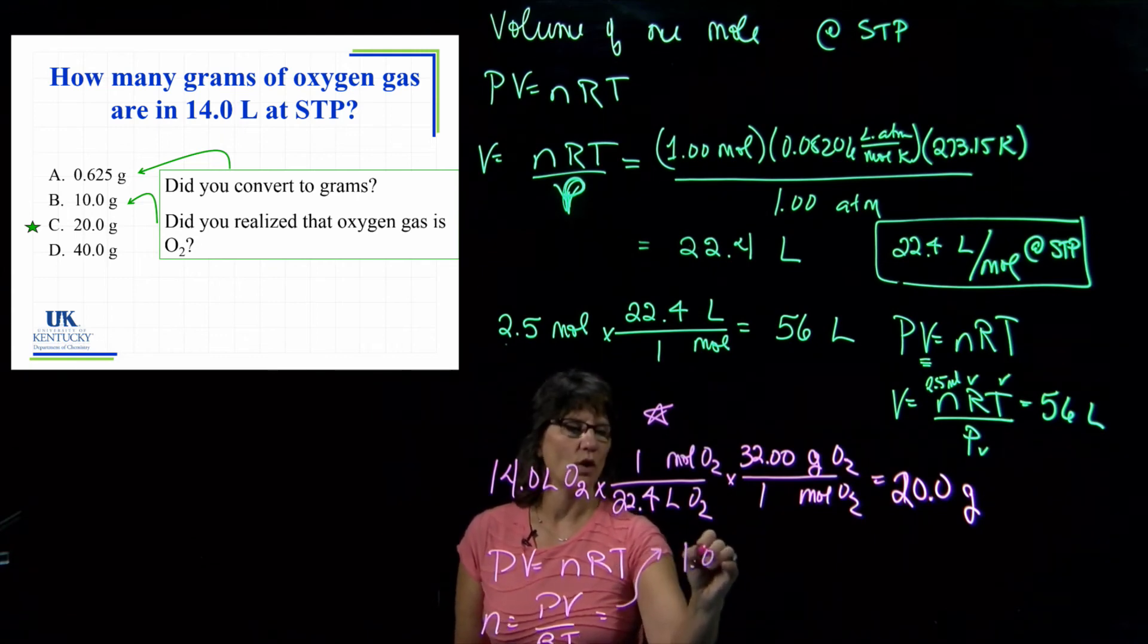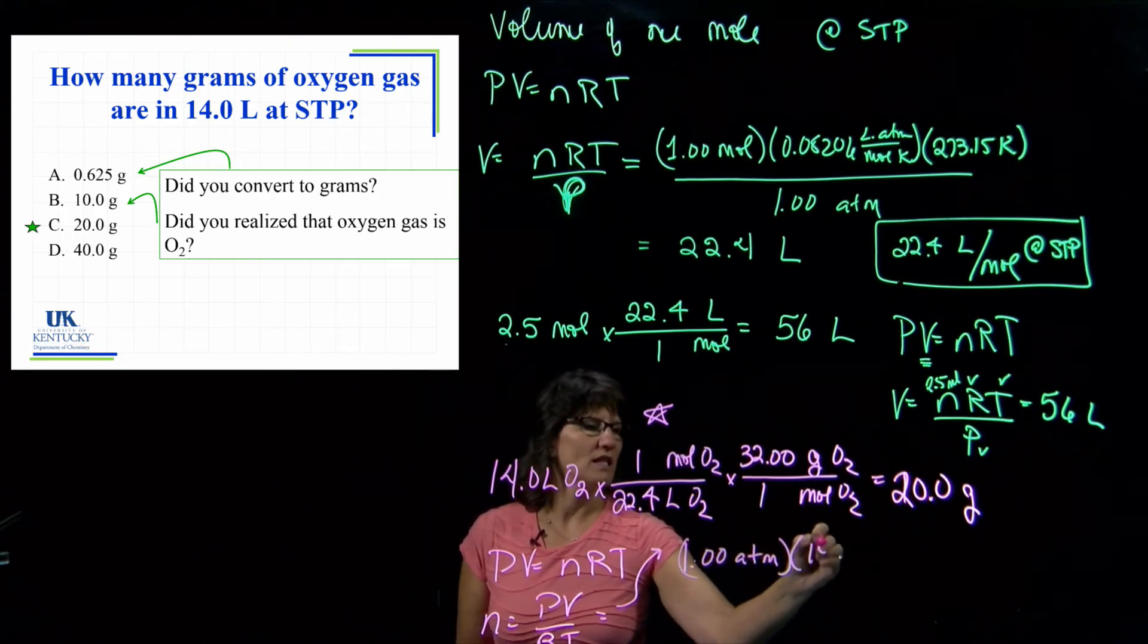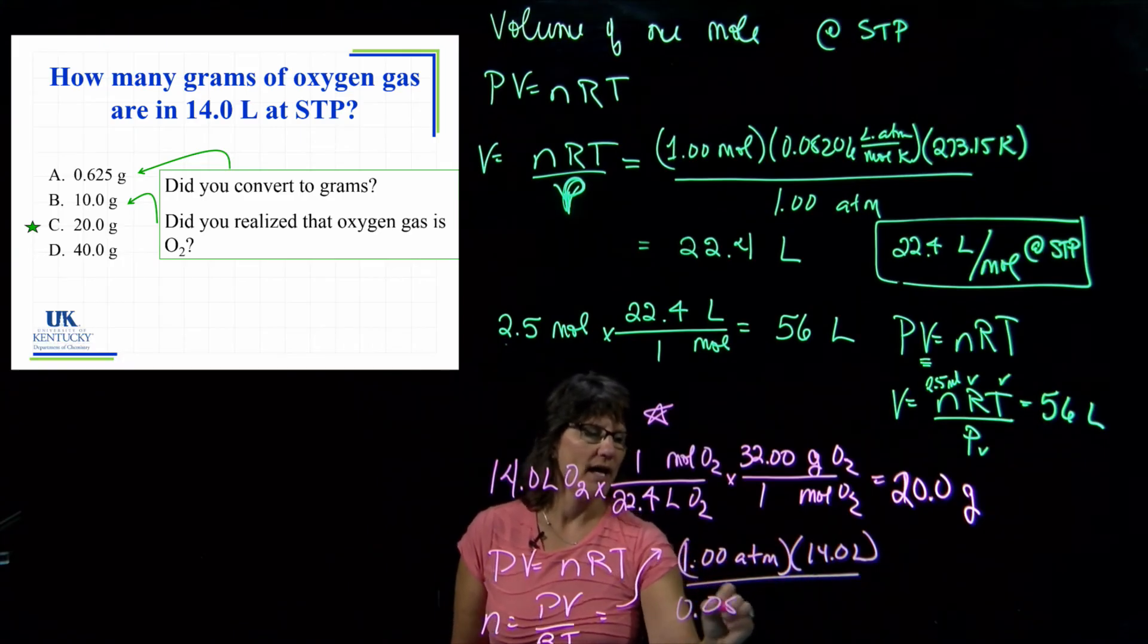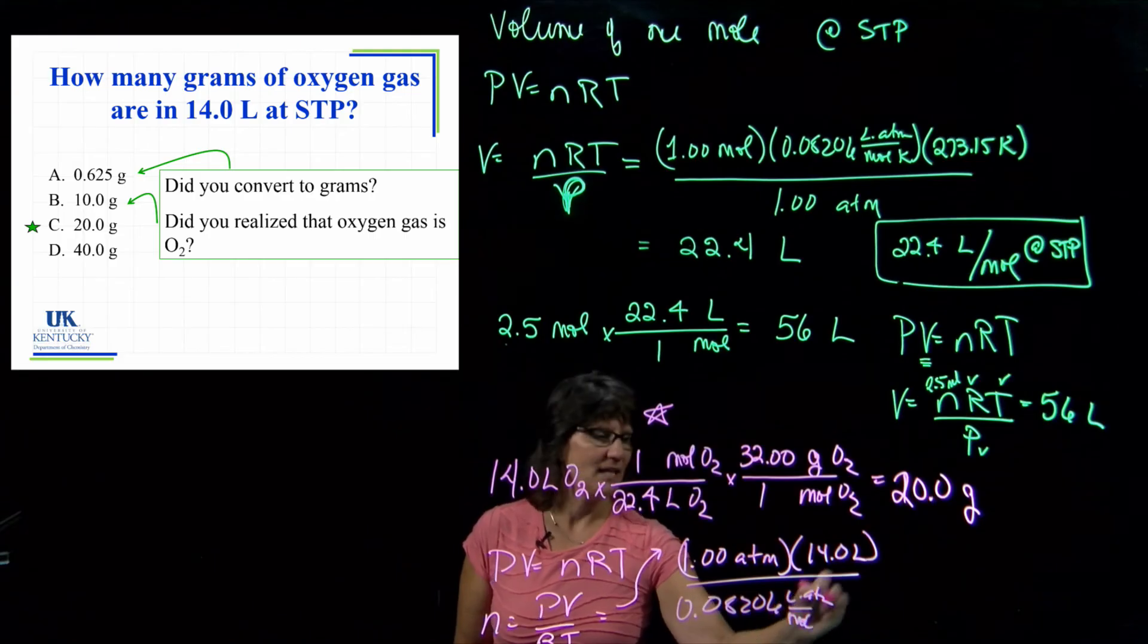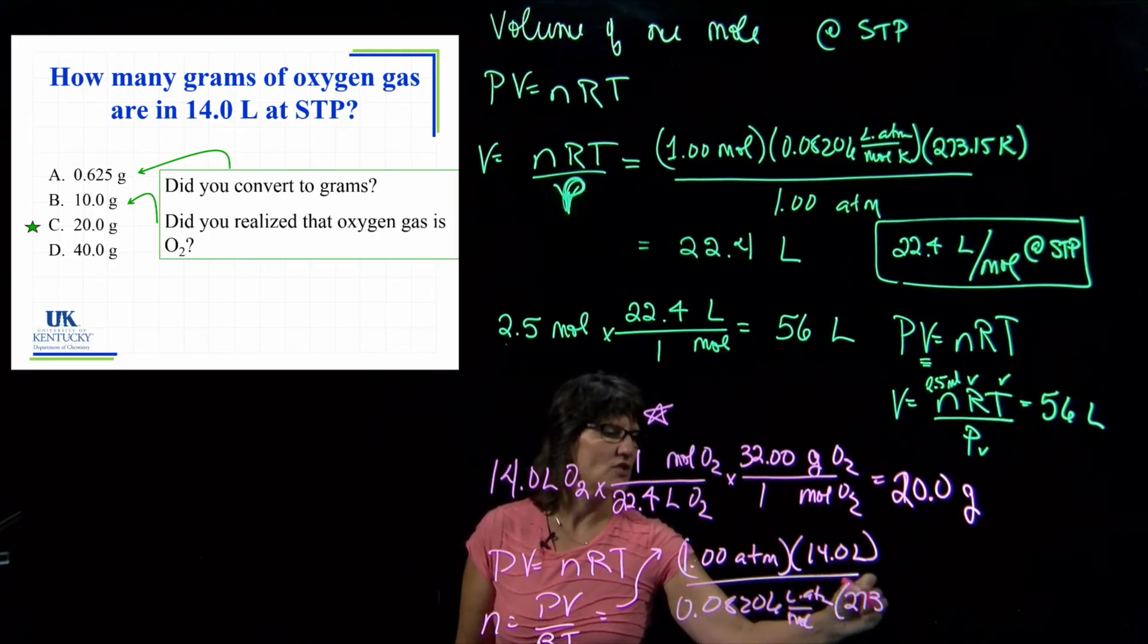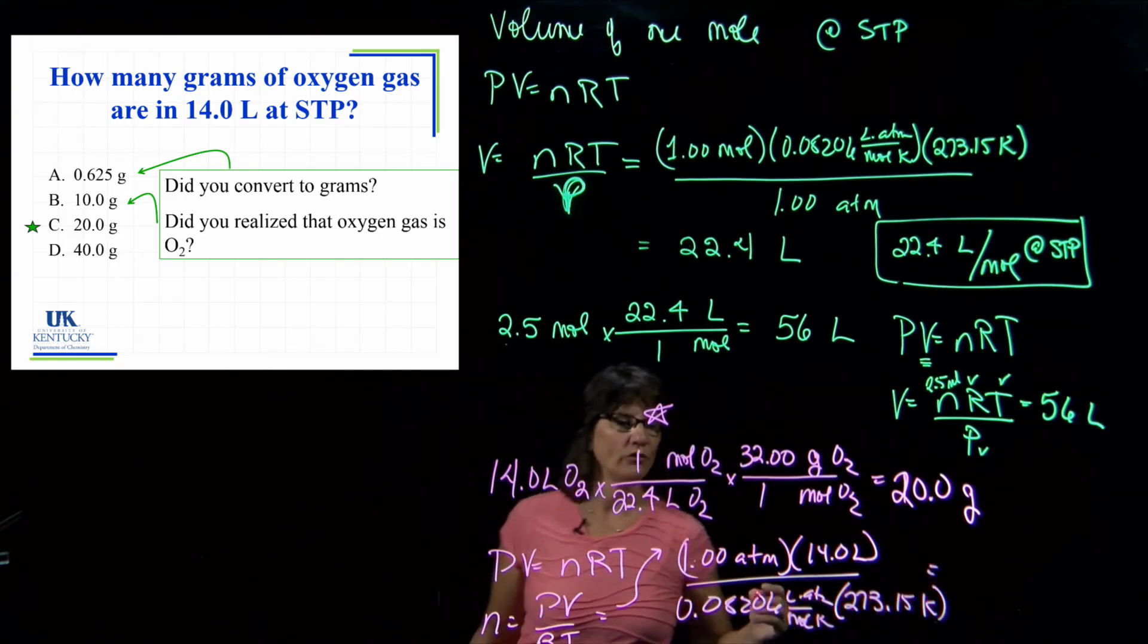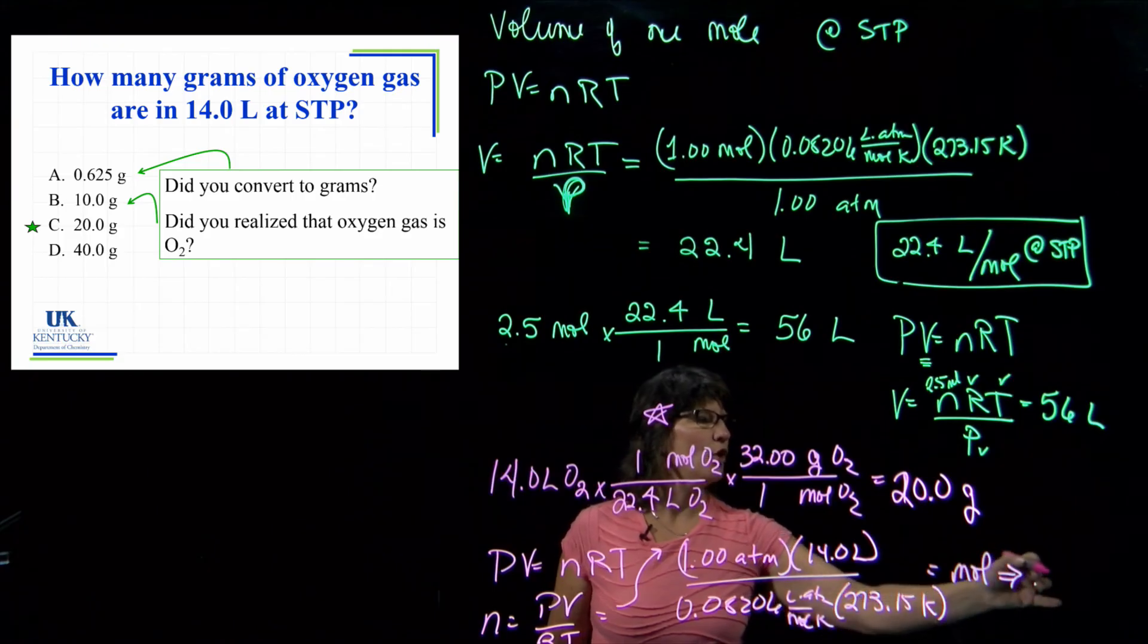My pressure, I know it's at STP, so it's one atmosphere. The volume was 14.0 liters, R is 0.08206, and the temperature since it's STP is 273.15 Kelvin. This will get me the moles, and then I can at that point move on to get the grams.